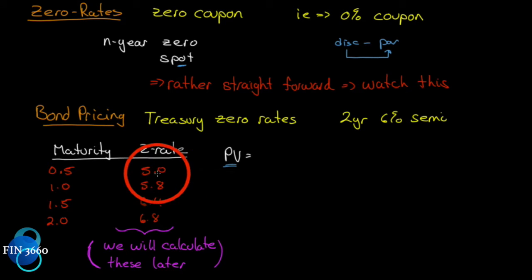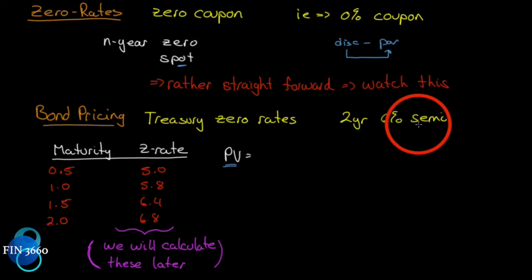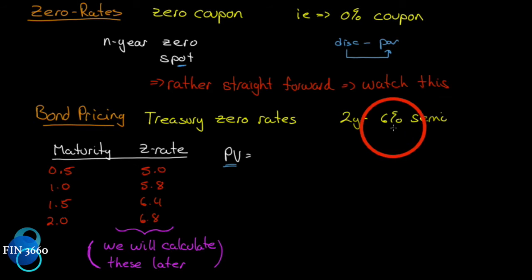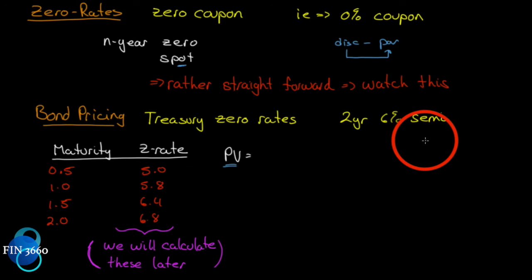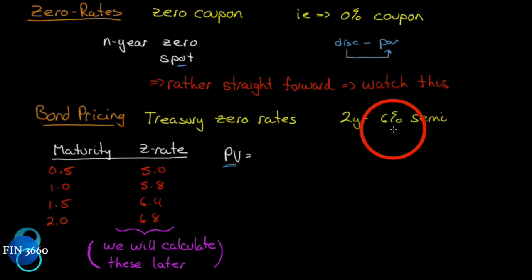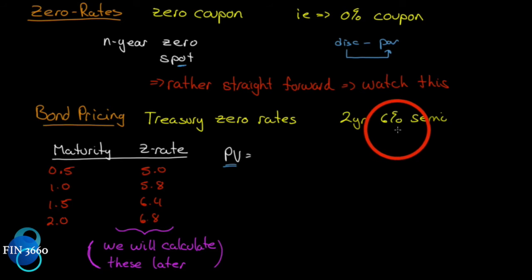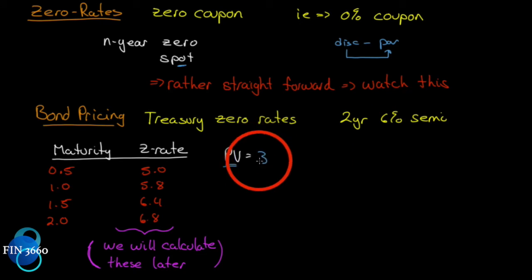So how do we find the price of this bond? We discount each of the cash flows. This is a two-year six percent semi — semi-annual — which on the 100-point pricing system pays six per year, or three per payment. So we get four payments of three, and the last payment also includes the future value of 100. We discount the first cash flow of three by the zero rate of five percent.